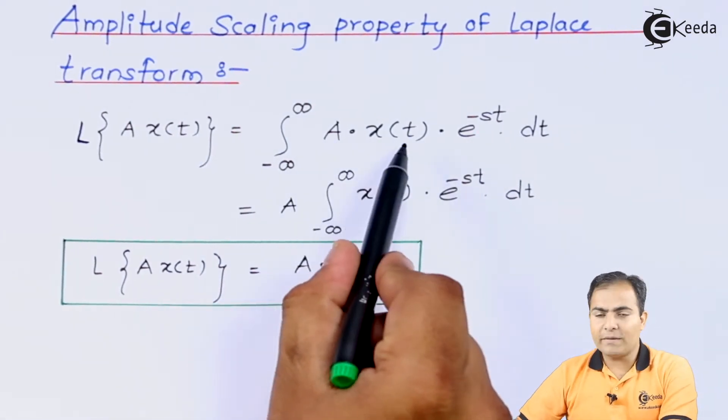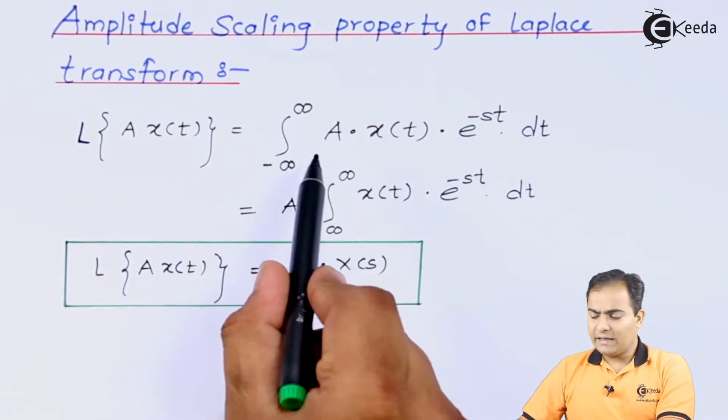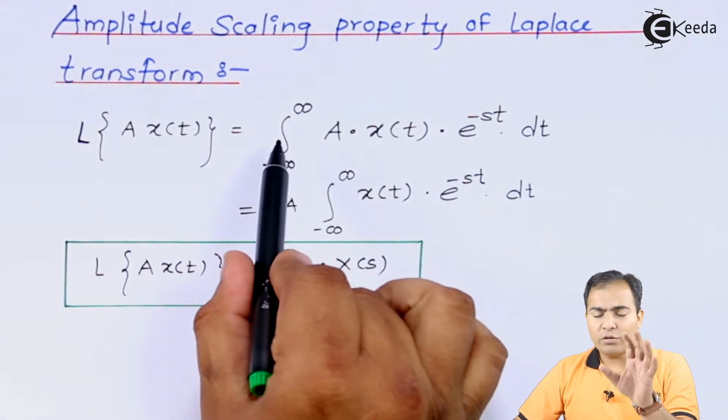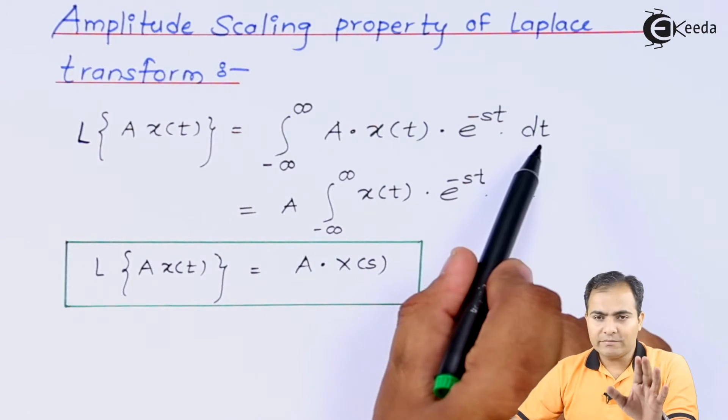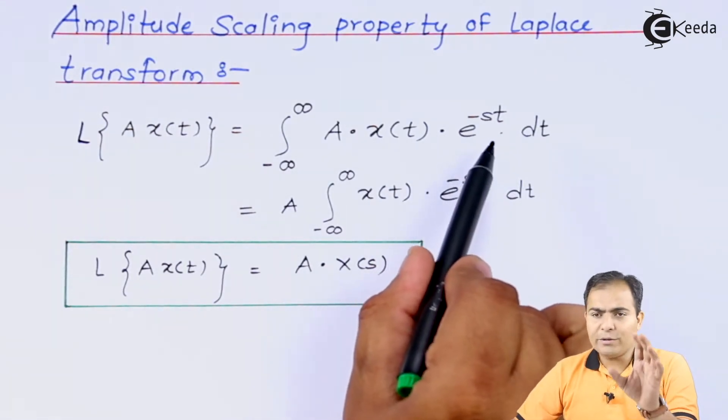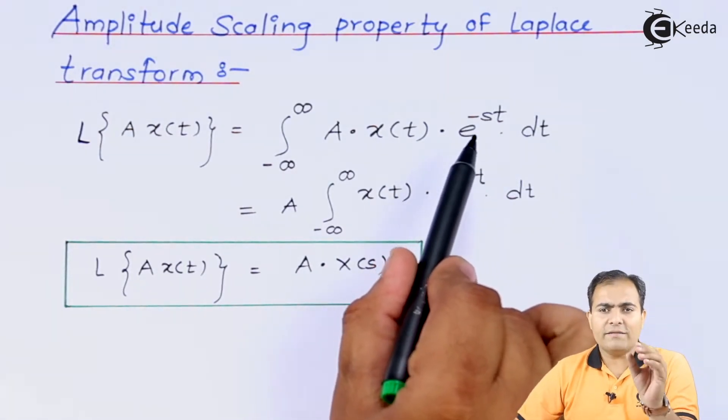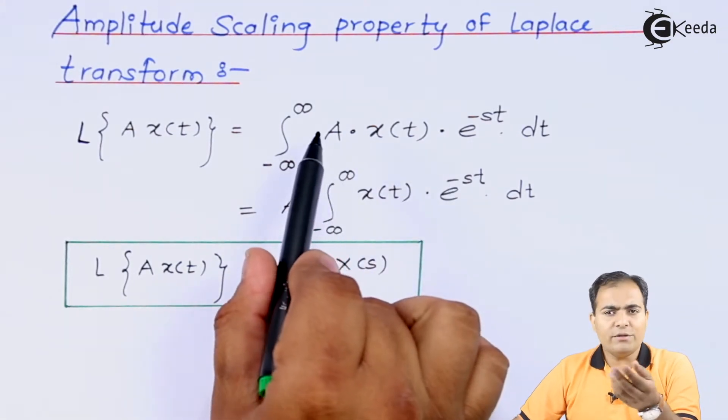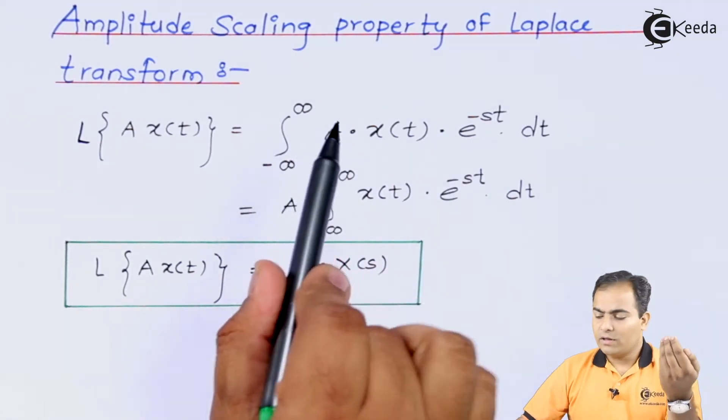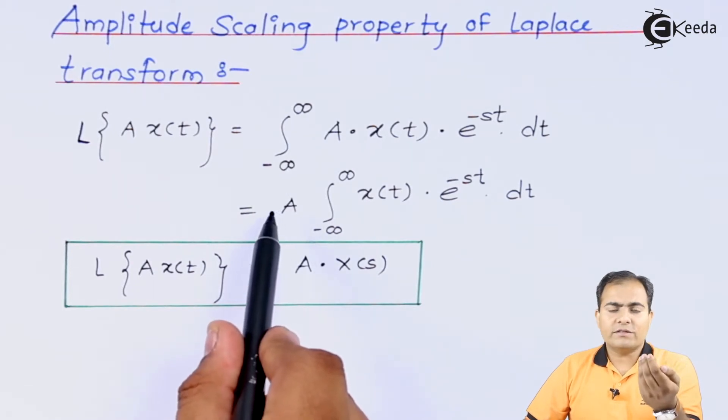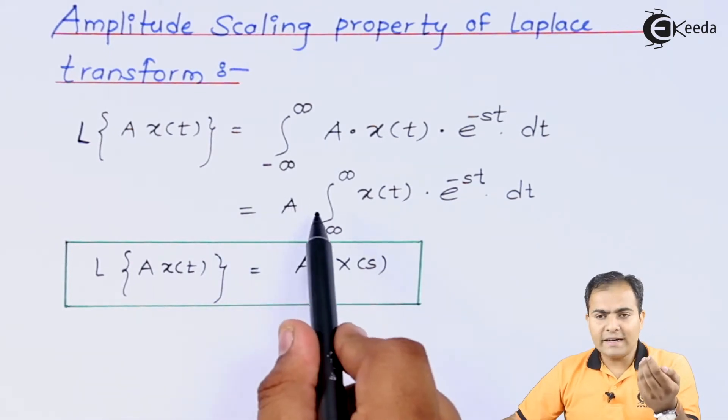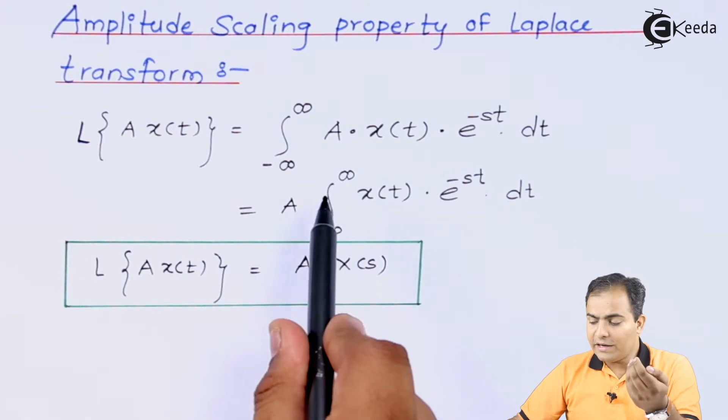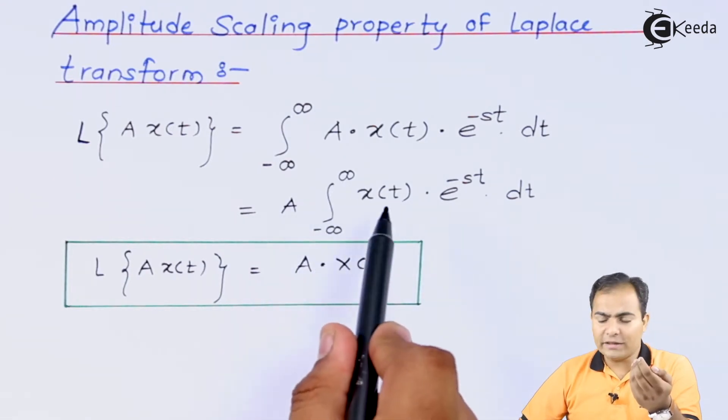Now we know that the A is the constant because this whole integration depends on t, or this we are going to integrate only the terms which are having value of t. So you can say that this A value is constant which will come outside. So I have written A outside the integration.